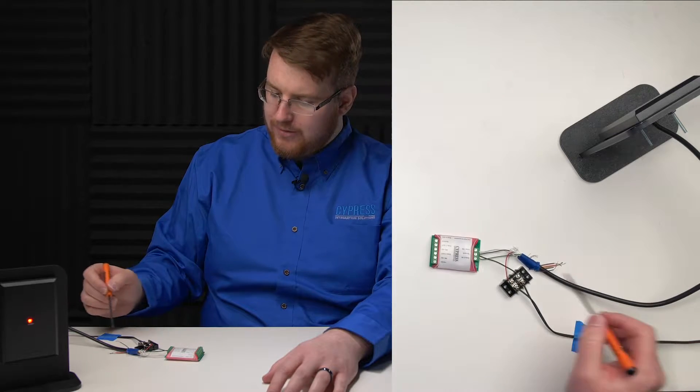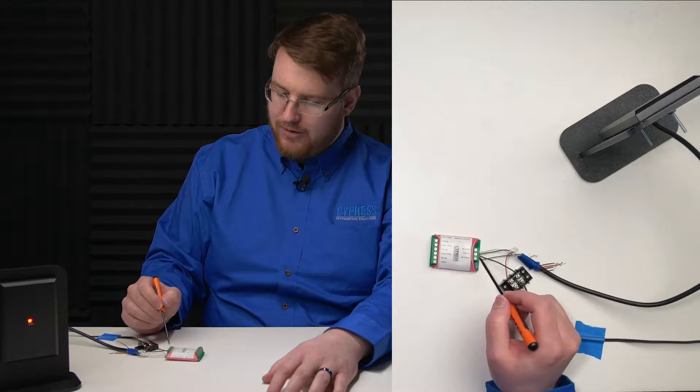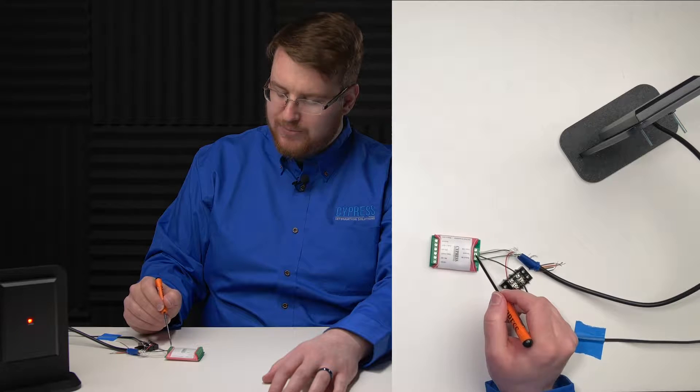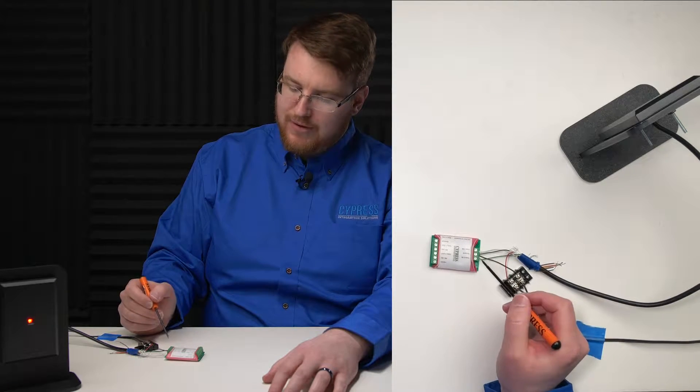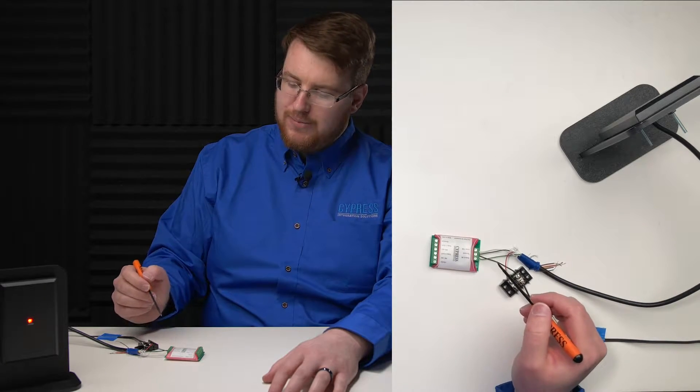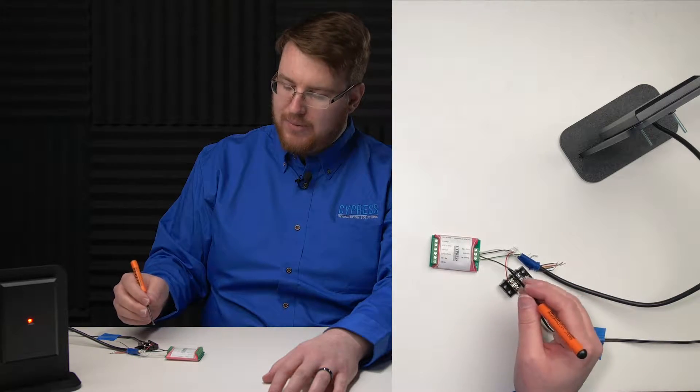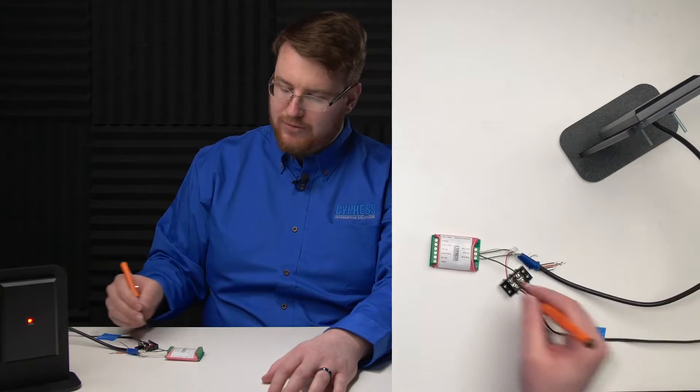We have power going to the reader and our ground coming to our ground pin on the CVX OPTW to give us that common ground for the Wiegand connection. This is important because without that, the Wiegand data might not flow properly from the reader to the OPTW.